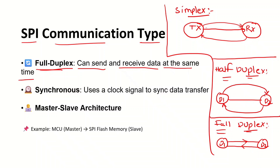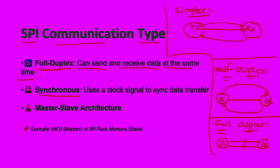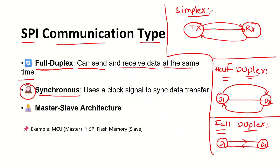What is the need for full duplex? If you can send and receive data at the same time, the data throughput increases. Throughput is the amount of data sent at a given time. Additionally, SPI is a synchronous protocol, meaning it uses a clock signal to sync the data transfer. It also uses a master and slave architecture — for example, one microcontroller is the master and its flash memory is the slave, and you can send or receive data between them.